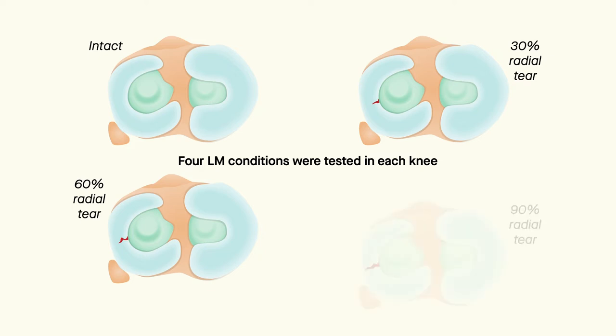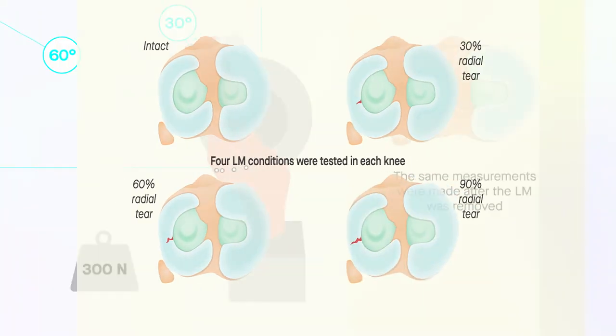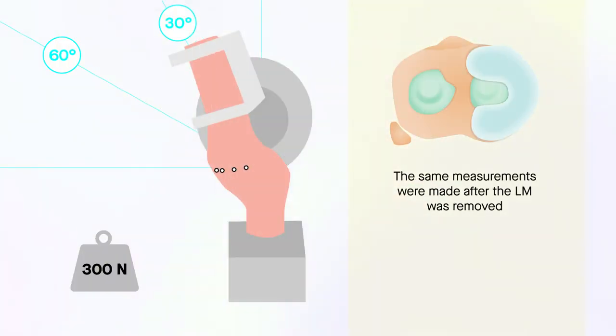Each knee was tested under a series of four LM conditions: with an intact LM and with 30%, 60%, and 90% radial tears. The LM was then removed, and the robotic system measured the knee forces over the same exact trajectories from the previous conditions.